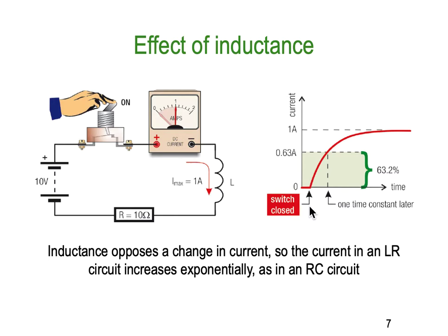One time constant is when the current reaches 63.2 percent of its final value. This whole thing only takes less than a quarter of a second. If we spread it out, the curve slowly grows over time — we reach that one time constant point, and a couple of milliseconds later the magnetic field has been established and current just continues at that rate.